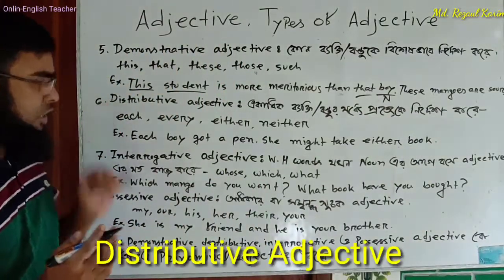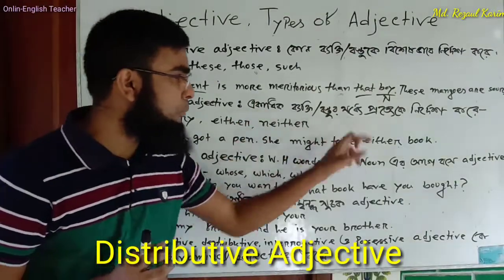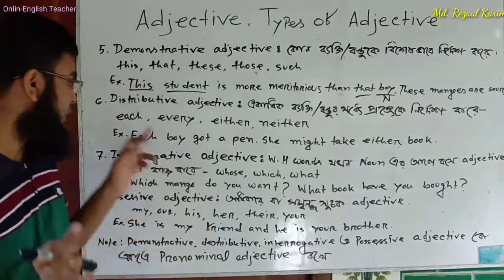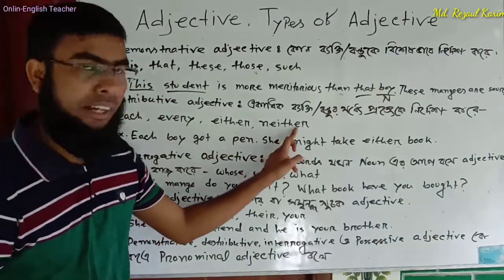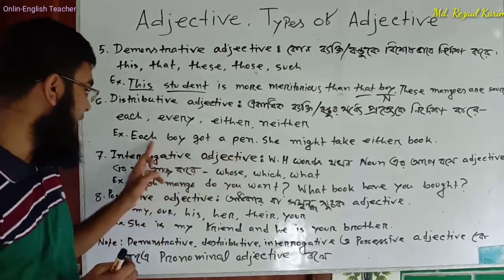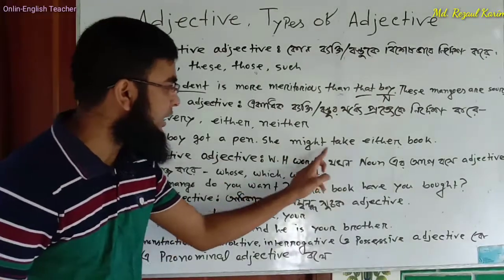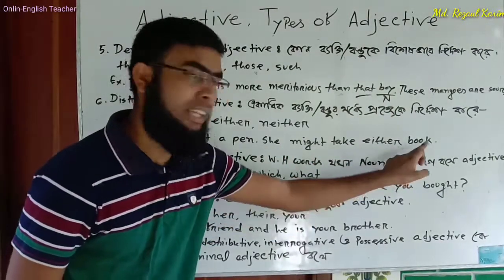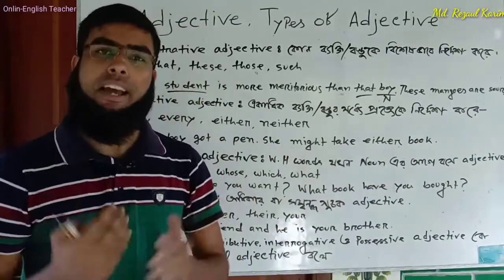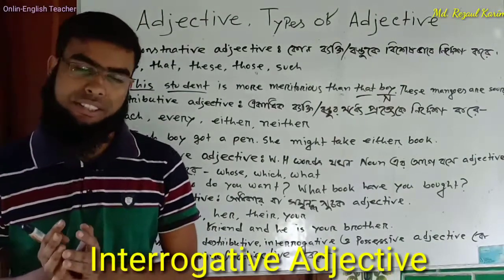Next is distributive adjective — it refers to each one of a number of persons or things individually. Distributive adjectives include: each, every, either, neither. Example: Each boy got a pen — 'each' is a distributive adjective. You may take either side — 'either' is a distributive adjective.